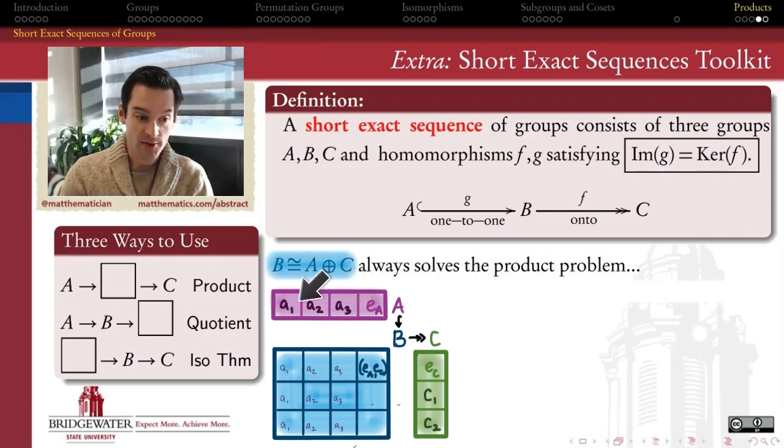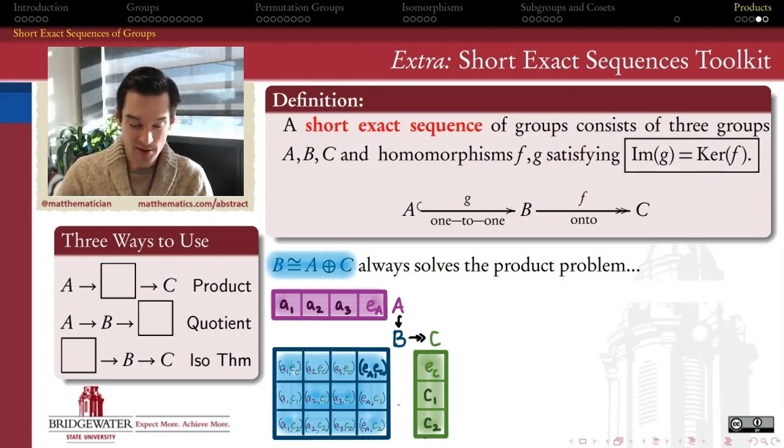Let's suppose that these are the elements in my group A: A1, A2, A3, and the identity. Here are my elements in C: C1, C2, and the identity. So, I'm going to pretend like this is a direct product of Z4 and Z3 or something. But this works in general as well.